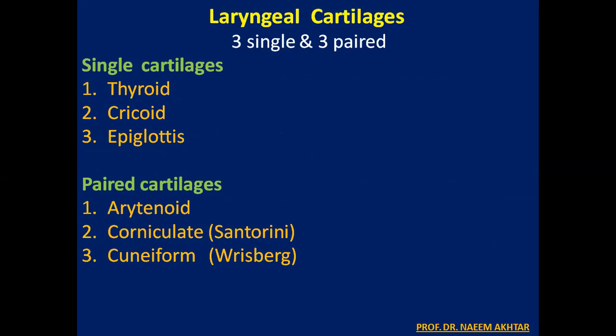The larynx consists of laryngeal cartilages, which are either single or paired. The three single laryngeal cartilages are the thyroid cartilage, cricoid cartilage, and epiglottis. The three paired cartilages of the larynx are the arytenoid, corniculate of Santorini, and cuneiform of Wrisberg cartilage.